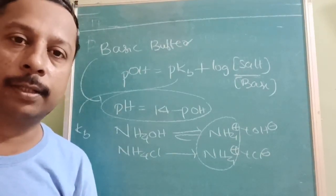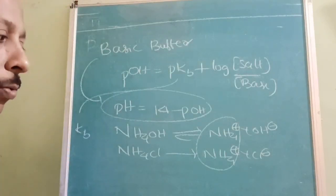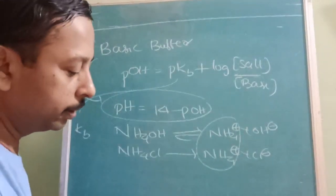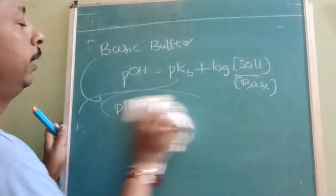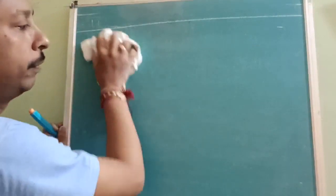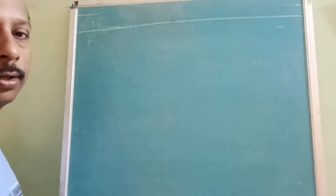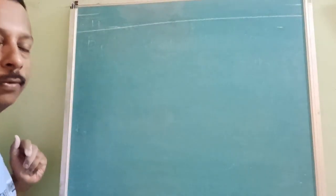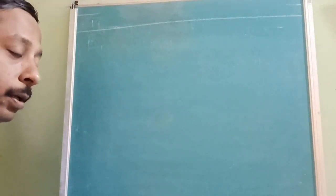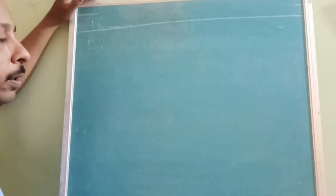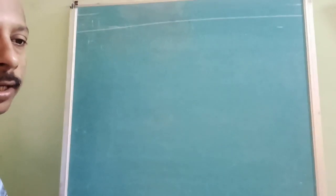Watch till the last for the buffer capacity — very important topic. Basic buffer example along with the formula — same formula, you can use the shortcut also: pOH = pKB + log(nS·VS / nB·VB). You can write the pH-pOH relationship: pH will increase and pOH will decrease accordingly.